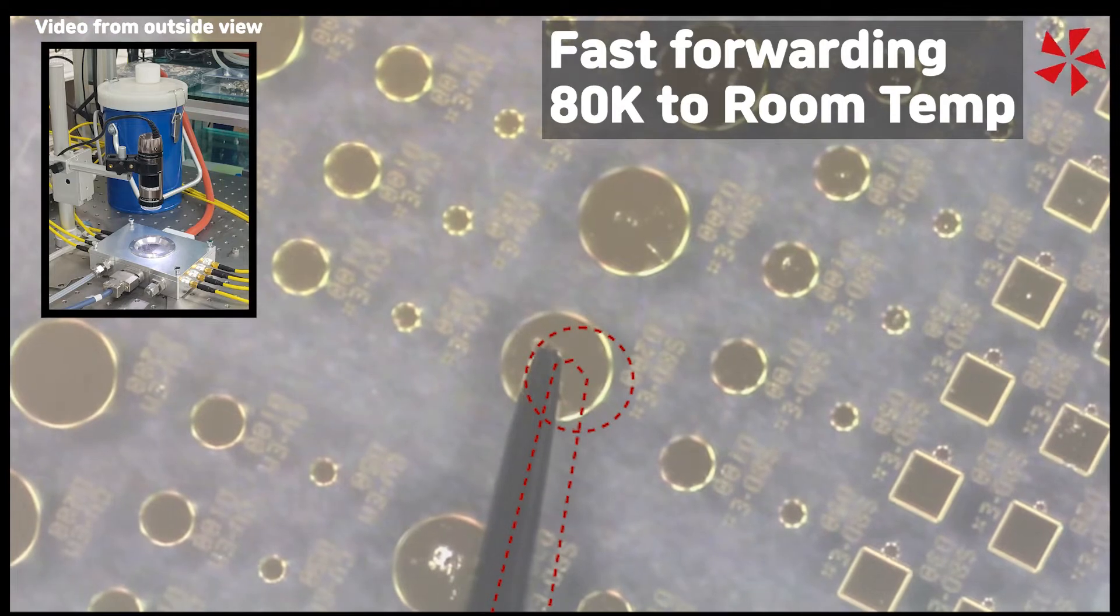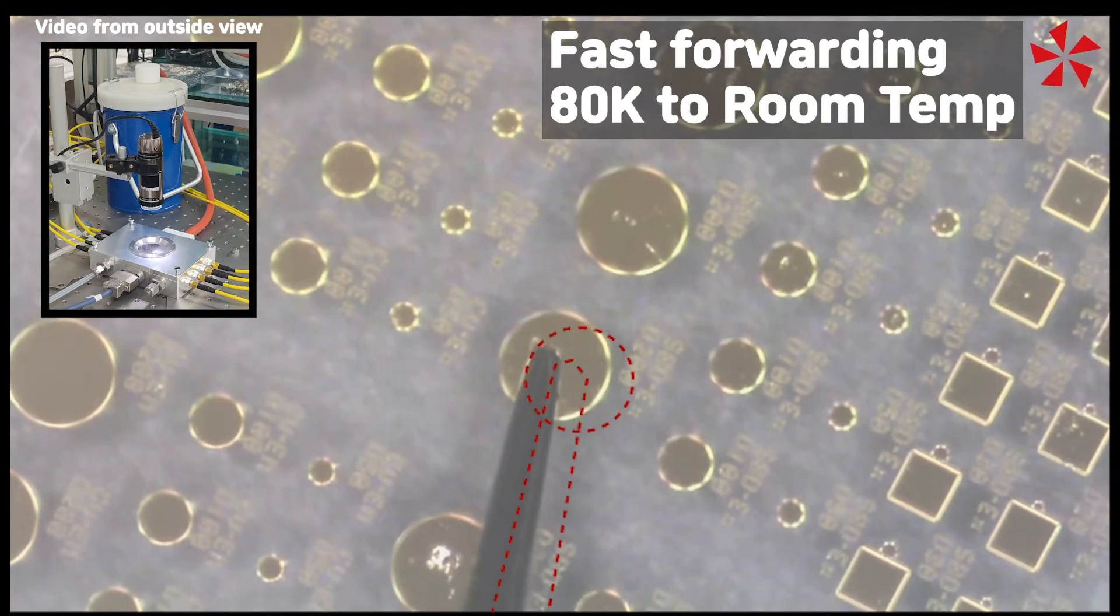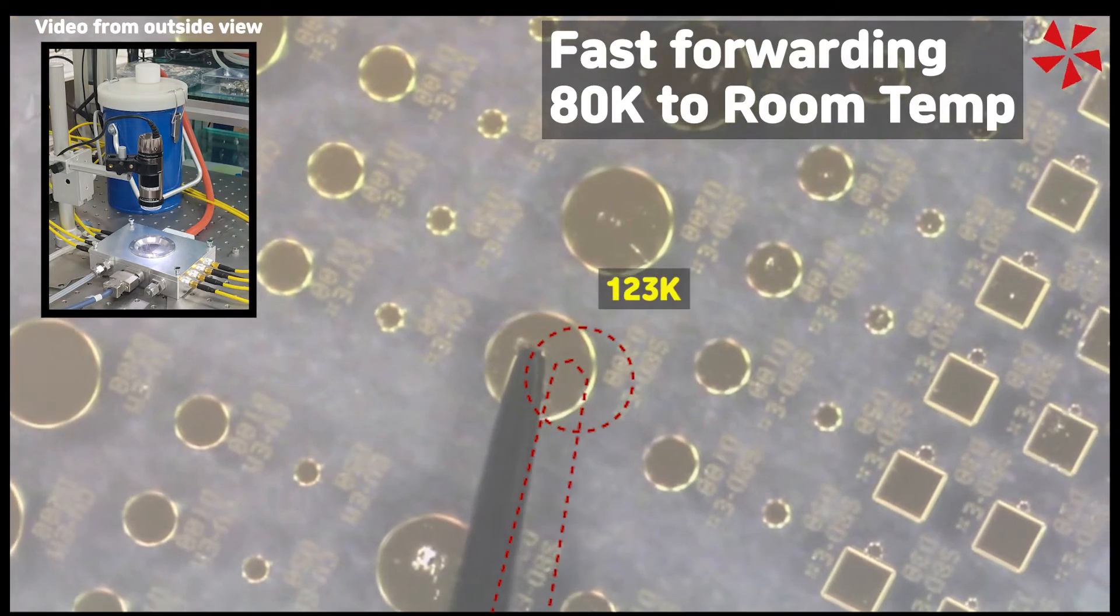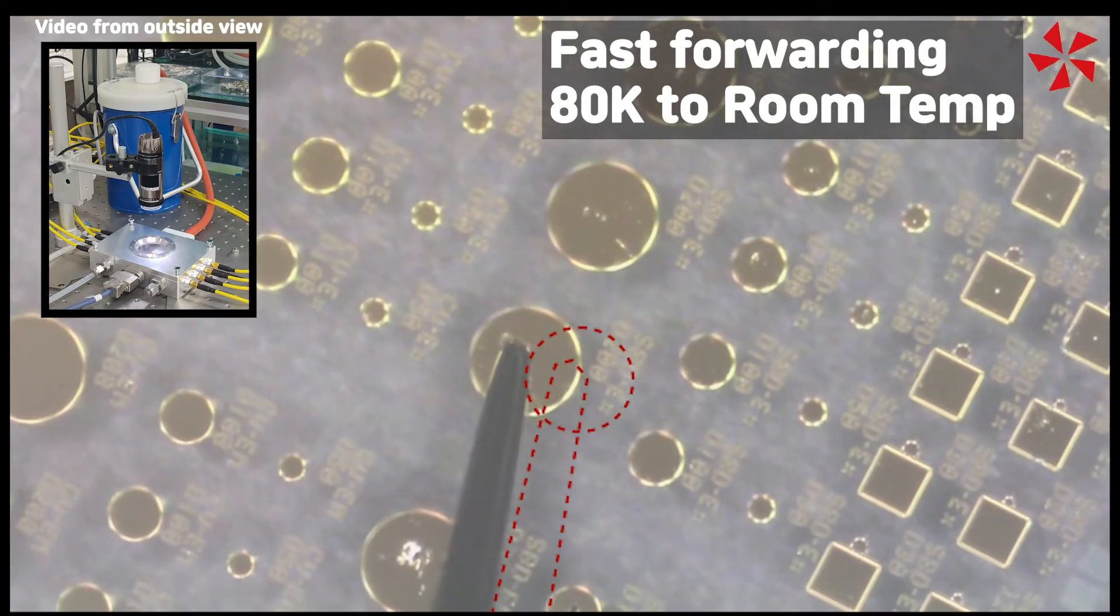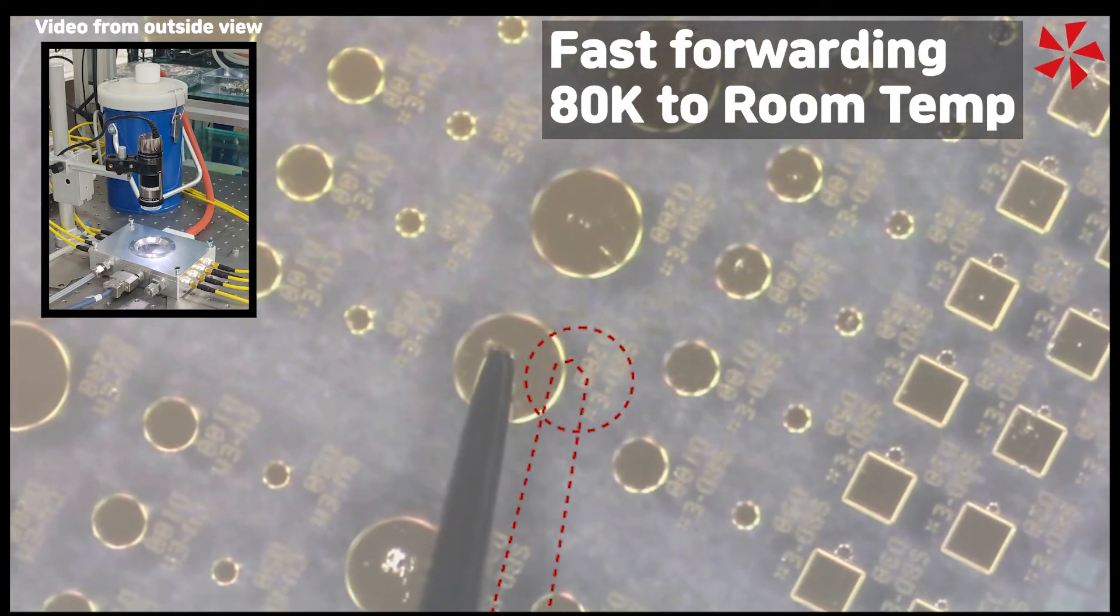I have marked the same point of the sample and probe with a red dotted line. Even with temperature variations, it can be seen that the probe point follows the sample movement well. You can see that the sample and probe move together in the video.